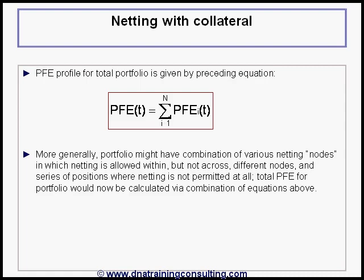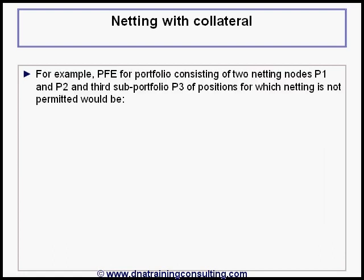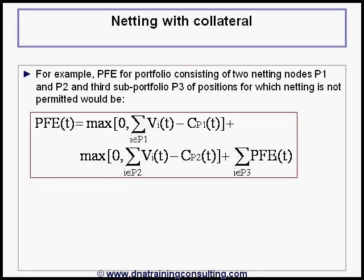The total PFE for such a portfolio would now be calculated via a combination of the equations above. For example, the PFE for a portfolio consisting of two netting nodes P1 and P2, and a third subportfolio P3 of positions for which netting is not permitted, would be given by the following equation, where i belonging to Pj means contract i belonging to the portfolio Pj.